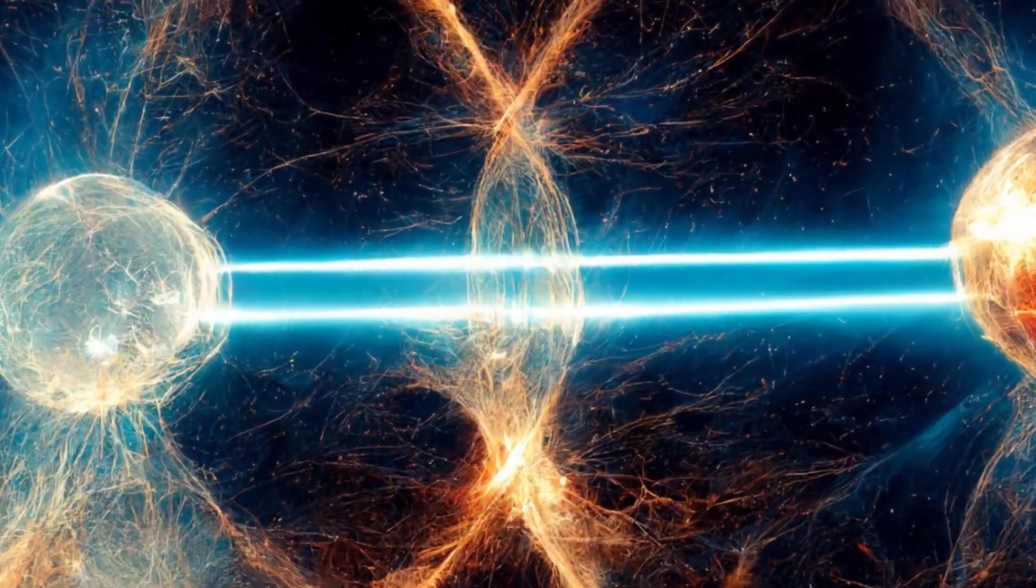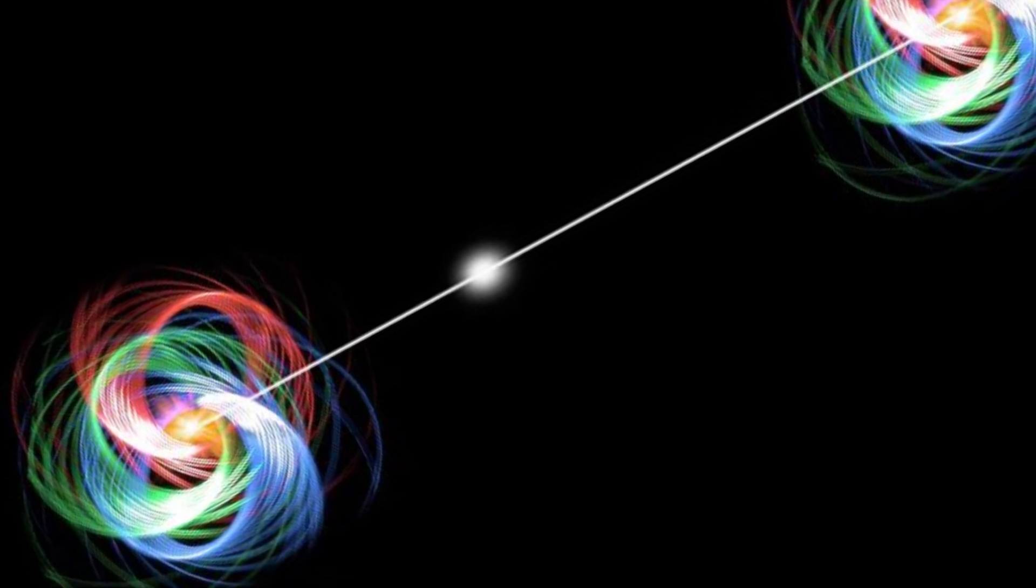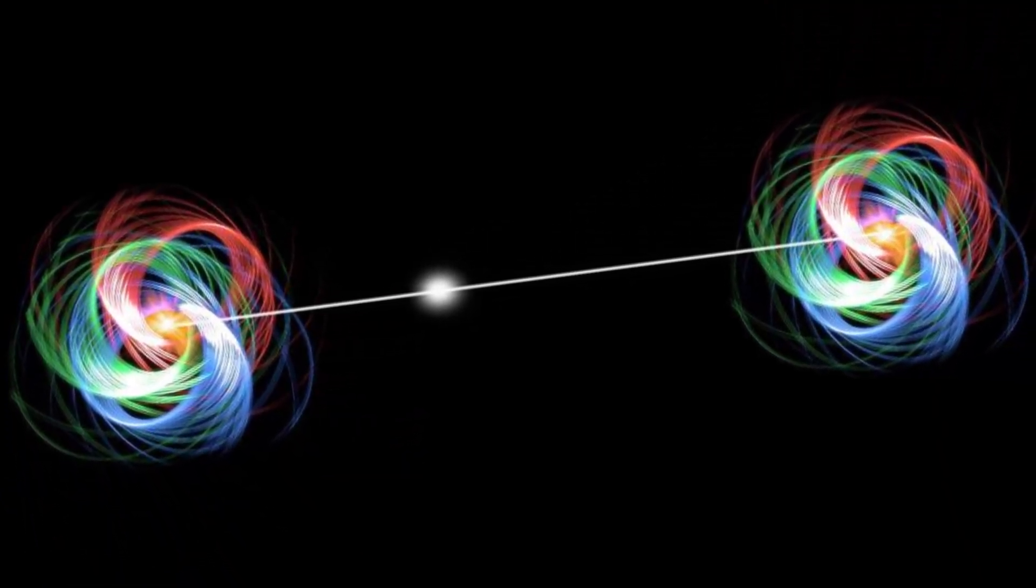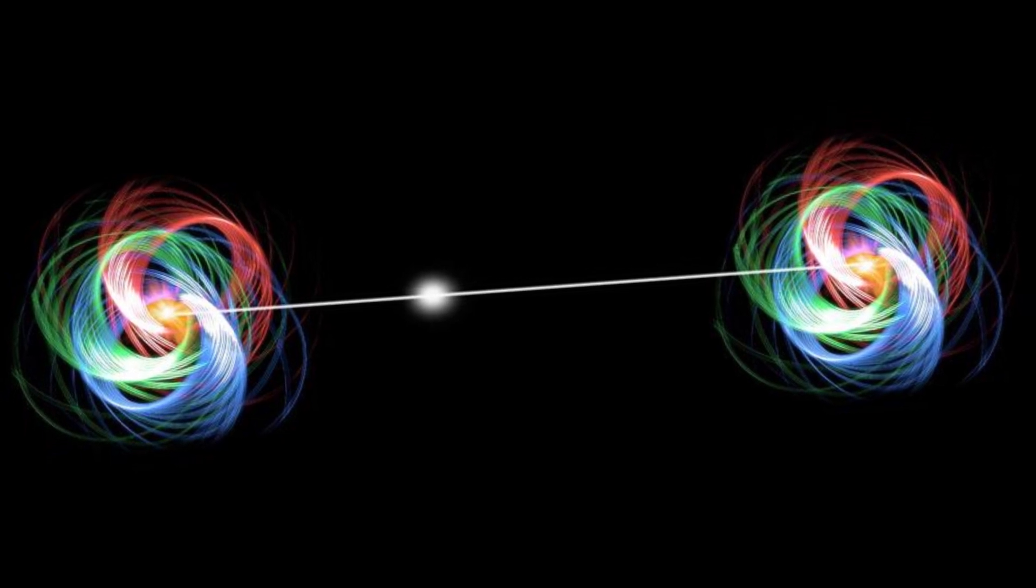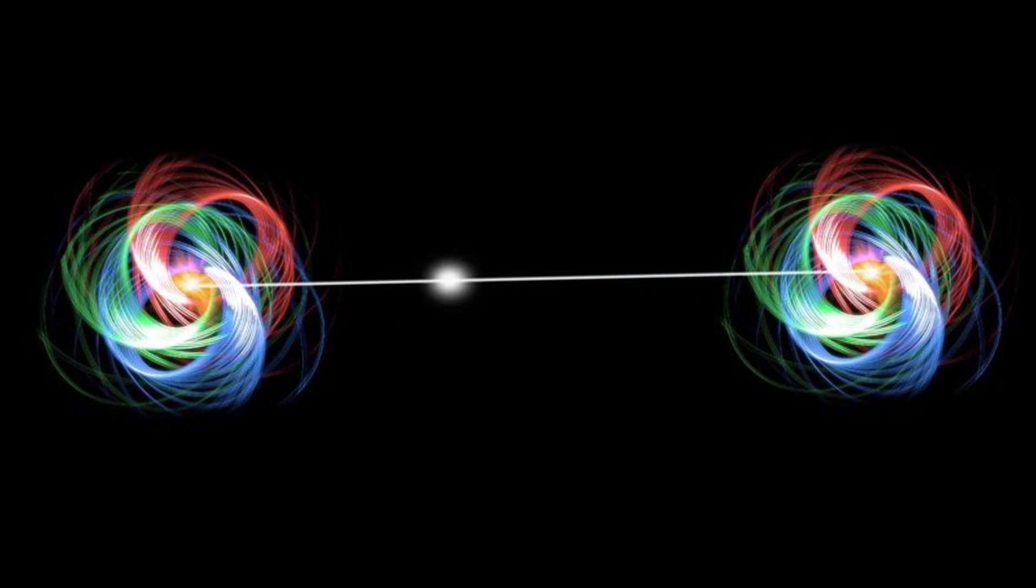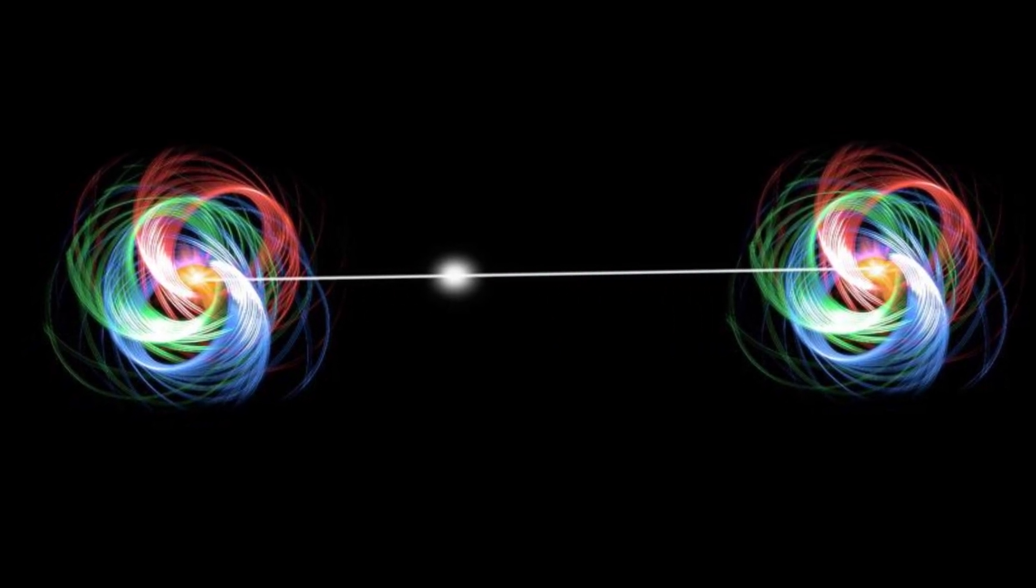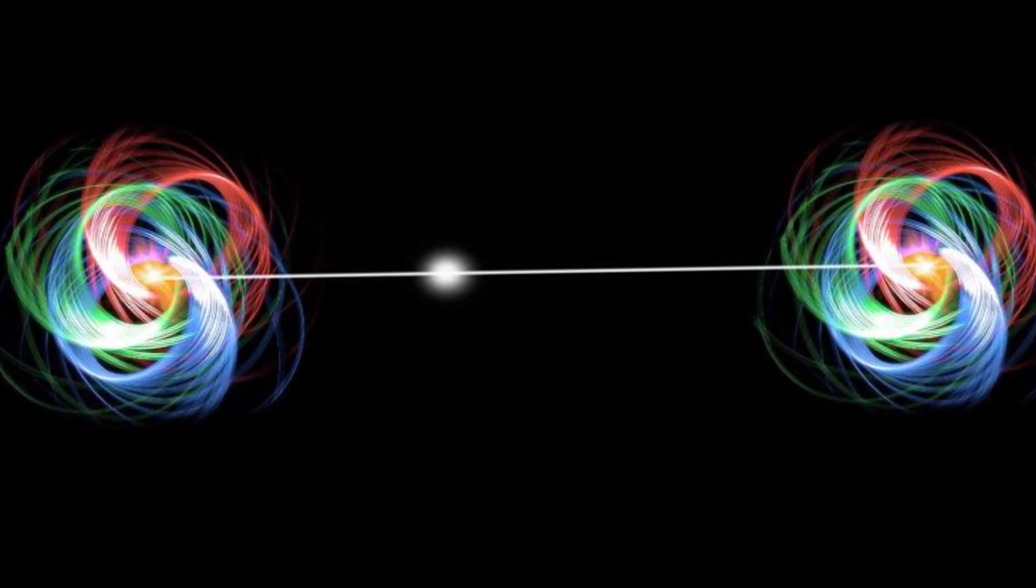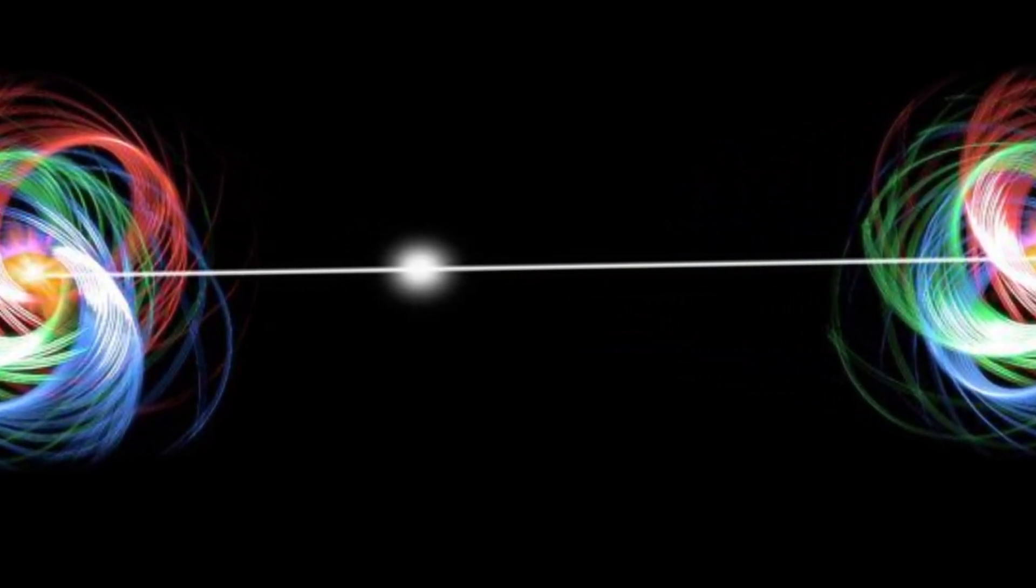It seems like information is traveling faster than light, but it's not. The system is just correlated in a way we don't fully understand. Entanglement is the foundation of quantum computing and quantum cryptography. It's not just weird, it's useful.